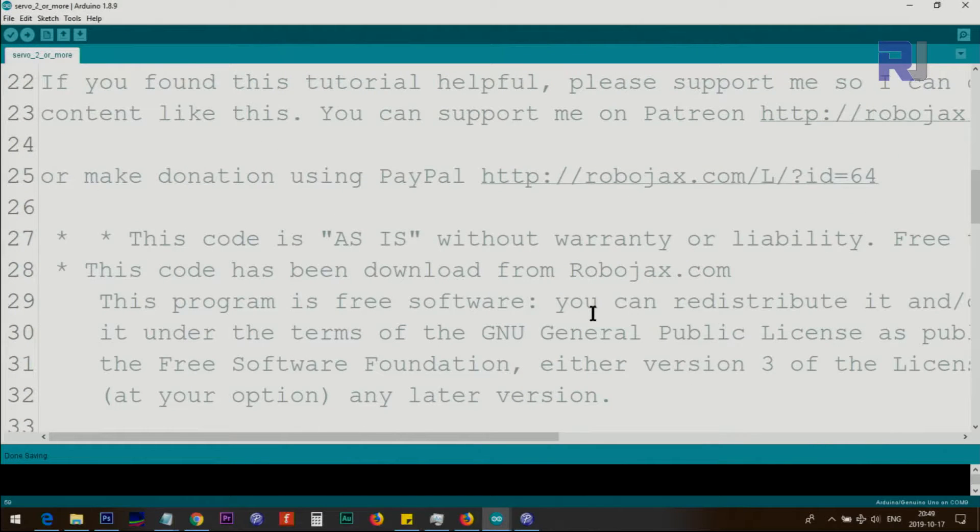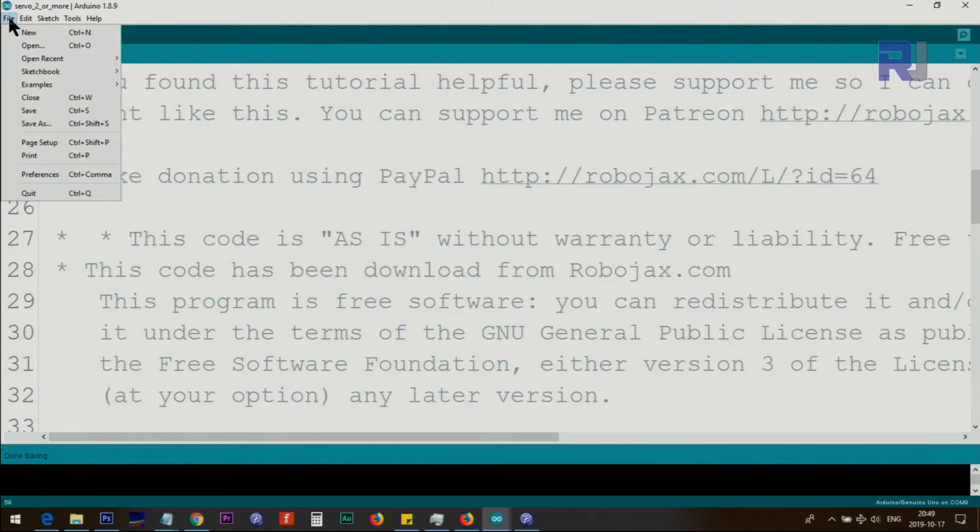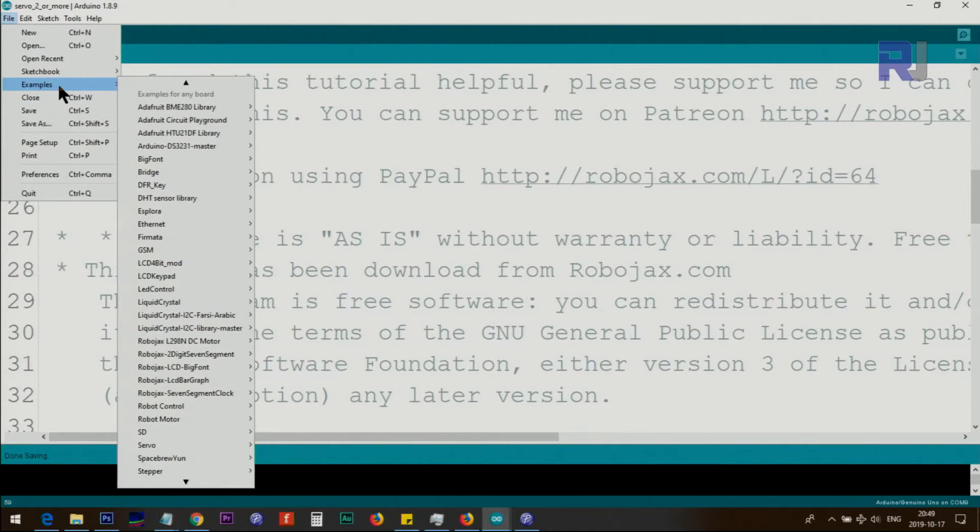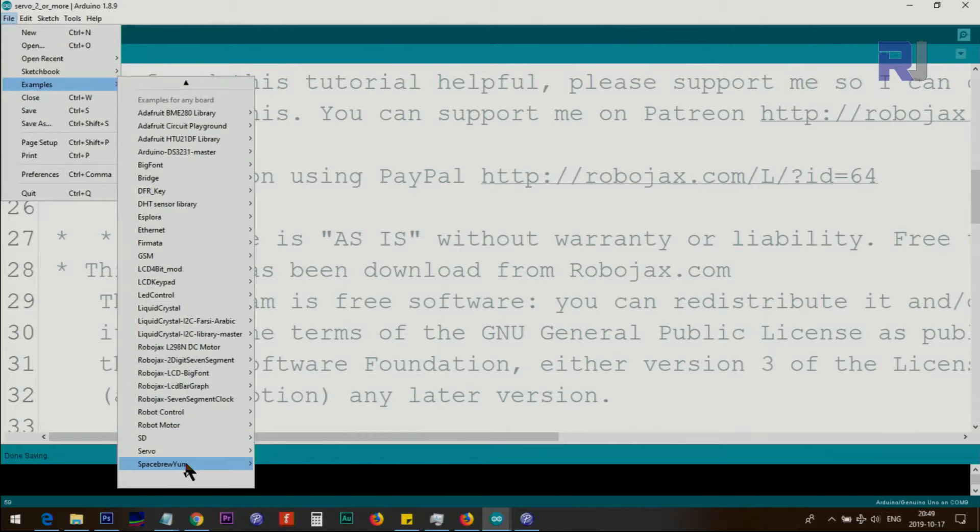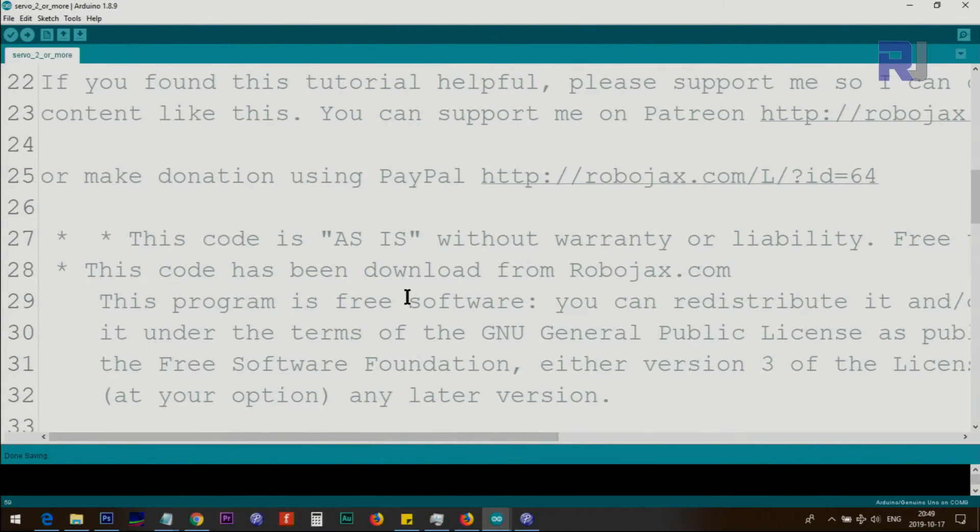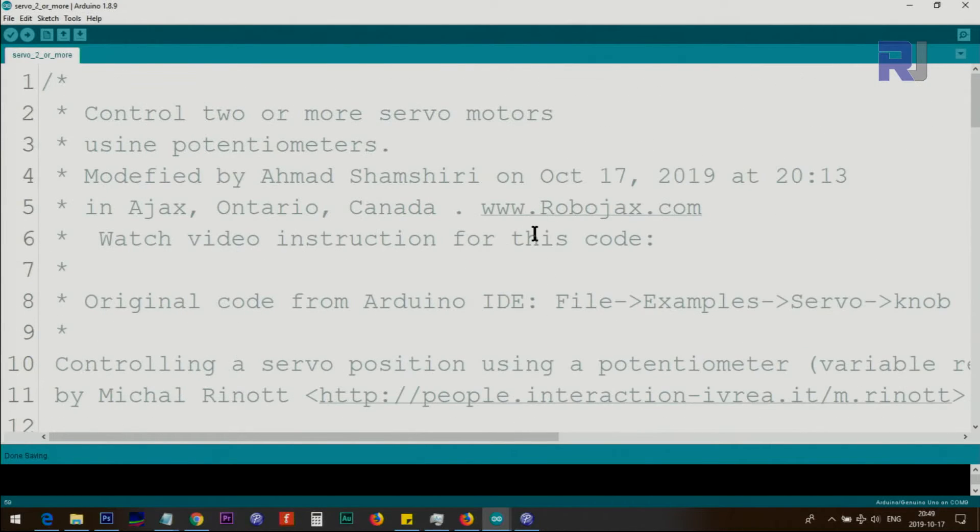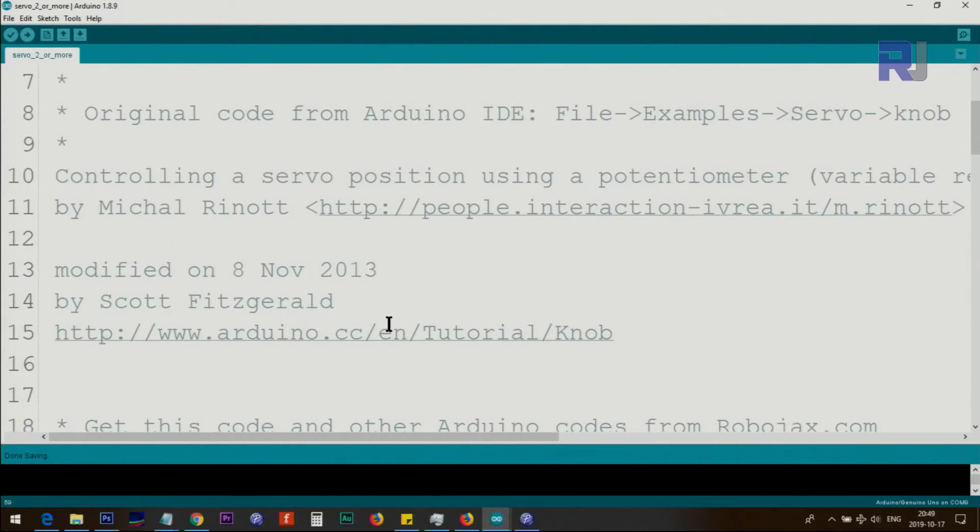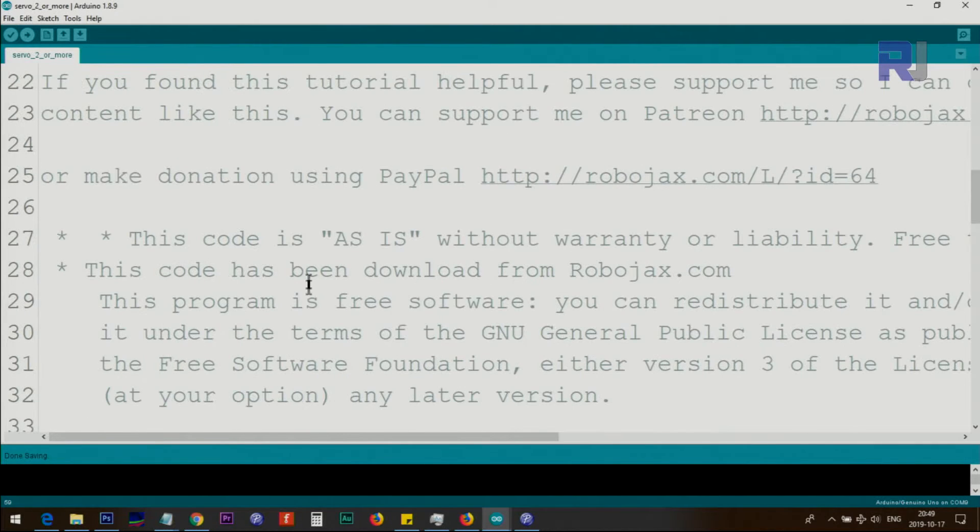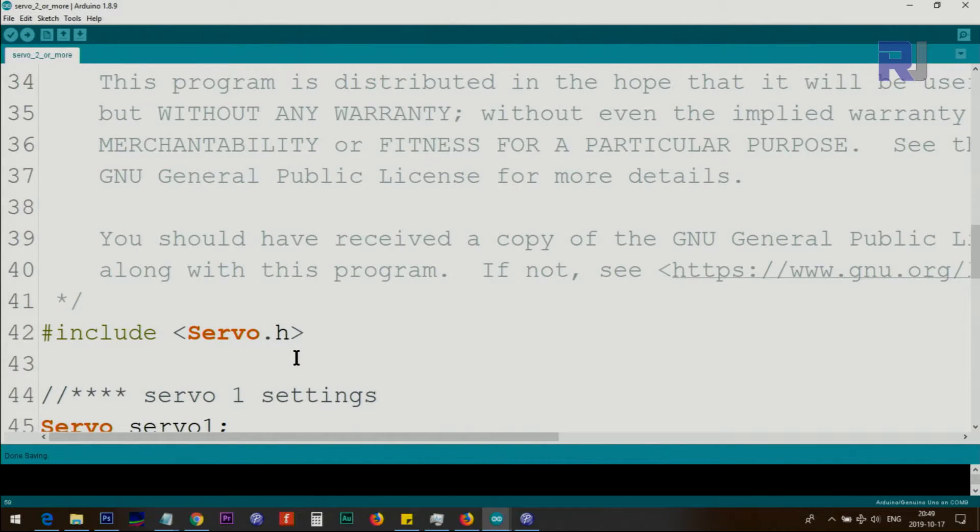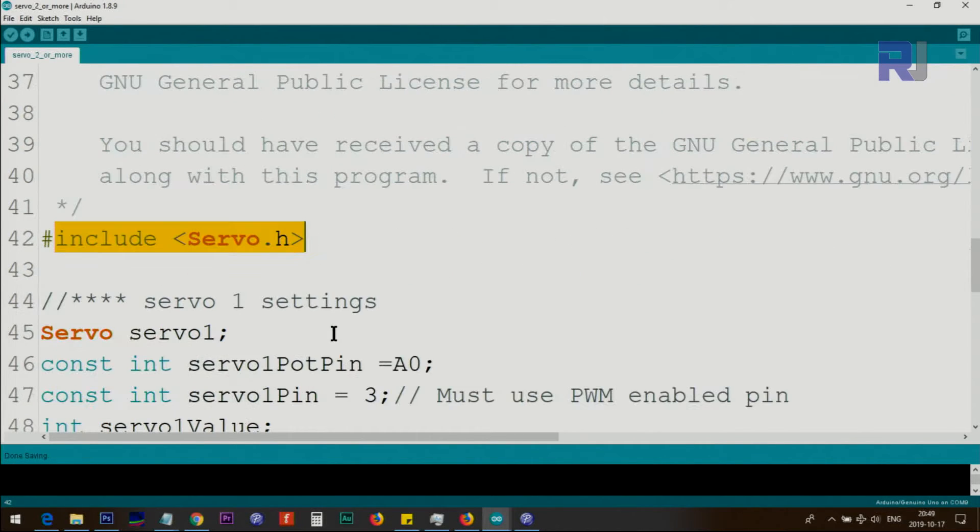Let me explain the code. This is the code that I've opened by clicking at File, Examples, Servo, and the Knob. After that I've updated it. I've left the original credit to the creator, I've just updated and modified it so it can work with this purpose. The servo.h is part of Arduino IDE—you don't need to download or include anything. This line include means the servo header or servo class will be included.